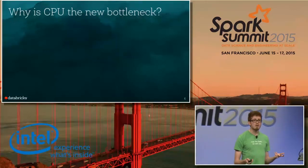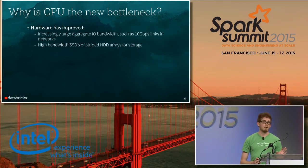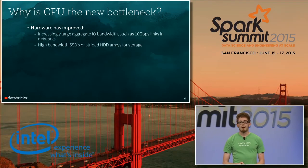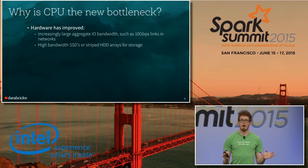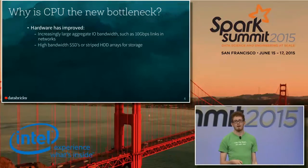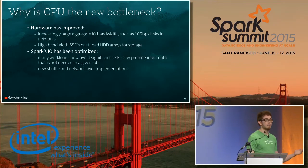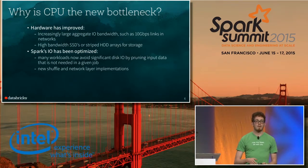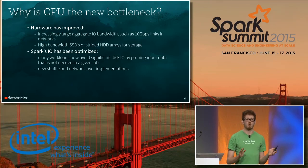Why is CPU the new bottleneck in many of these workloads? A major driver is changes in hardware trends. Hardware has improved significantly — in data centers you're seeing solid-state disks widely deployed and 10 gigabit Ethernet, which offers much more aggregate bandwidth and eliminates many bottlenecks. Frameworks themselves have become better too. Spark has been significantly optimized for its IO layers over the past several releases — in many cases we either perform less IO or do it more efficiently.